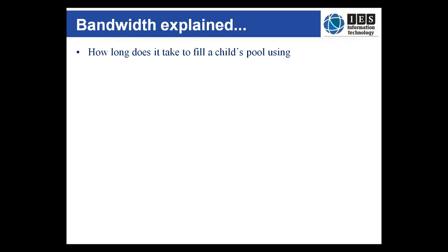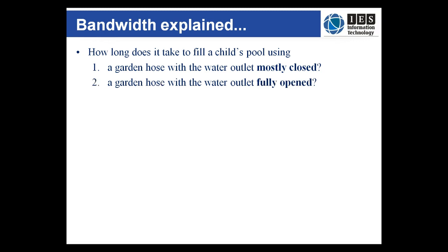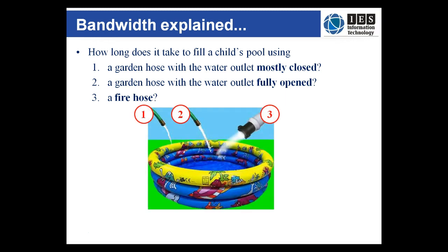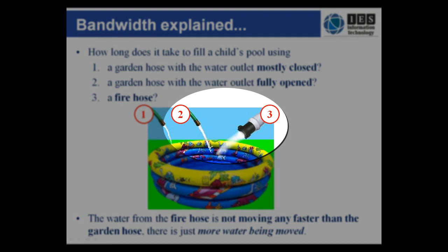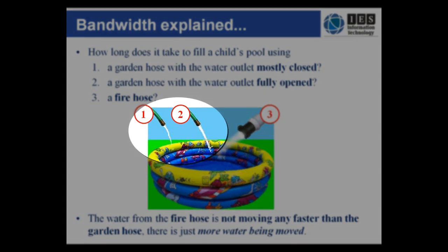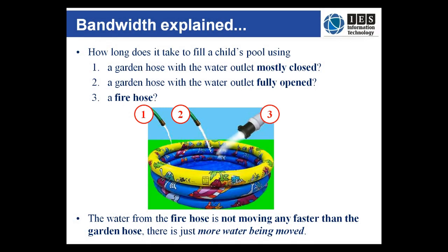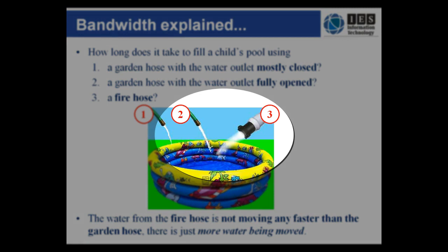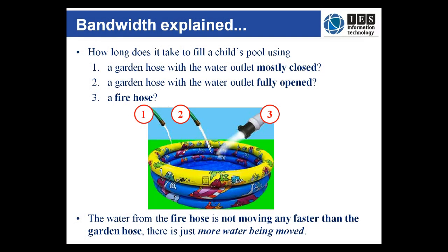Bandwidth can be explained like this: imagine you want to fill a child's pool. Consider three ways of filling it. One, a garden hose with the tap only just opened. Two, the same garden hose with the tap fully open. And three, a fire hose connected to the same water source as the garden hose, with the tap fully open. The fire hose fills the pool fastest because its bandwidth is greater — it allows more water to be sent — even though the water travels at the same rate as the fully open garden hose.